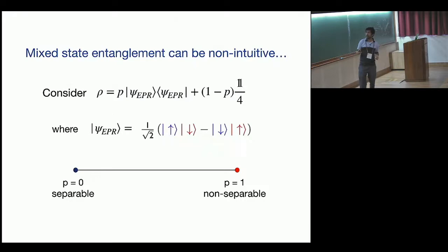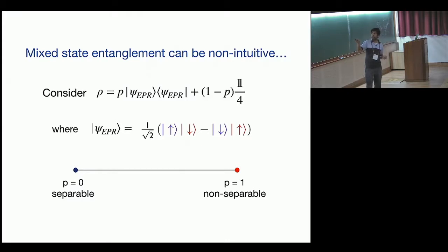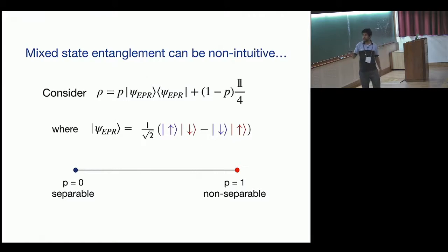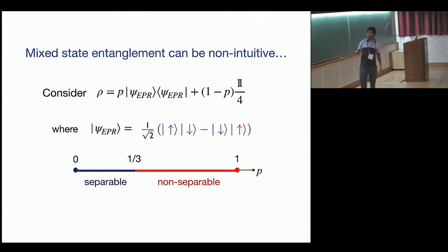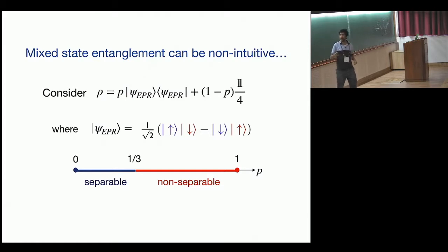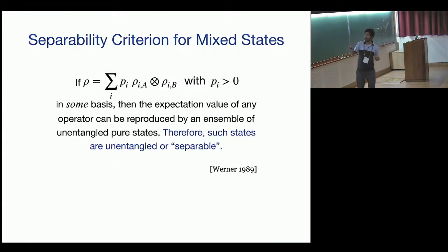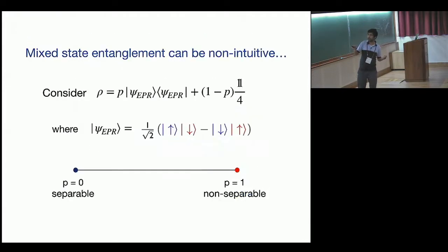This is counterintuitive. Consider a system where with probability p you prepare an EPR state and with probability 1-p you prepare an identity state. When p=0 it's clearly unentangled; when p=1 it's maximally entangled. Surprisingly, there's a transition at p=1/3 between separable and non-separable states—below 1/3, there exists a choice of basis allowing you to write the state in separable form. This shows mixed-state entanglement is not intuitive.